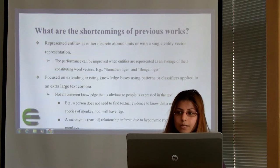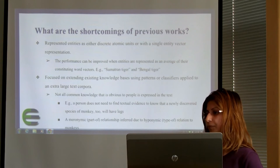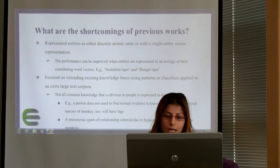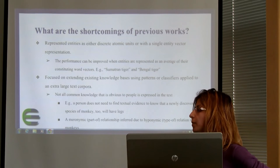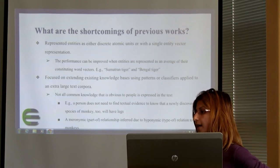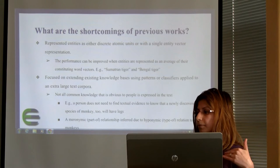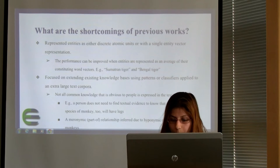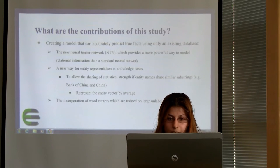Another problem with the existing Knowledge-Based completion works are that they are using patterns or classifiers that apply to an extra large corpora to complete the Knowledge-Base that they have. And we know that all the common knowledge is not in the text. So we want to be able to use the facts that we have in the Knowledge-Base to complete the Knowledge-Base itself. For example, one of the very famous questions that deep learning question-answering systems cannot solve is how many legs millipede has. It is because maybe we don't have this knowledge in the extra text that we have. So we want to use the analogy that we have in the Knowledge-Base to complete the Knowledge-Base itself.